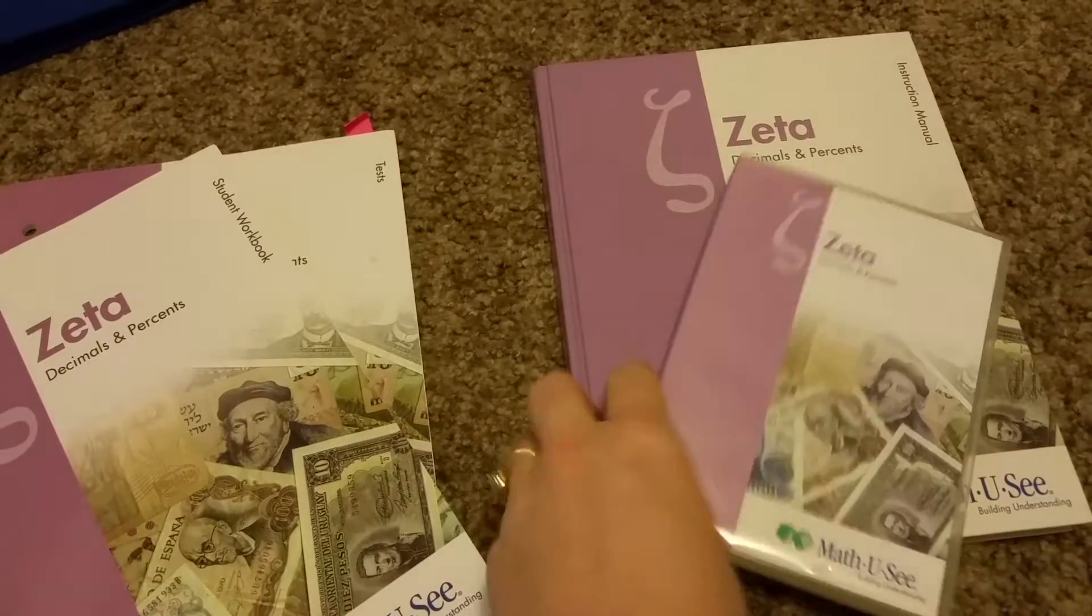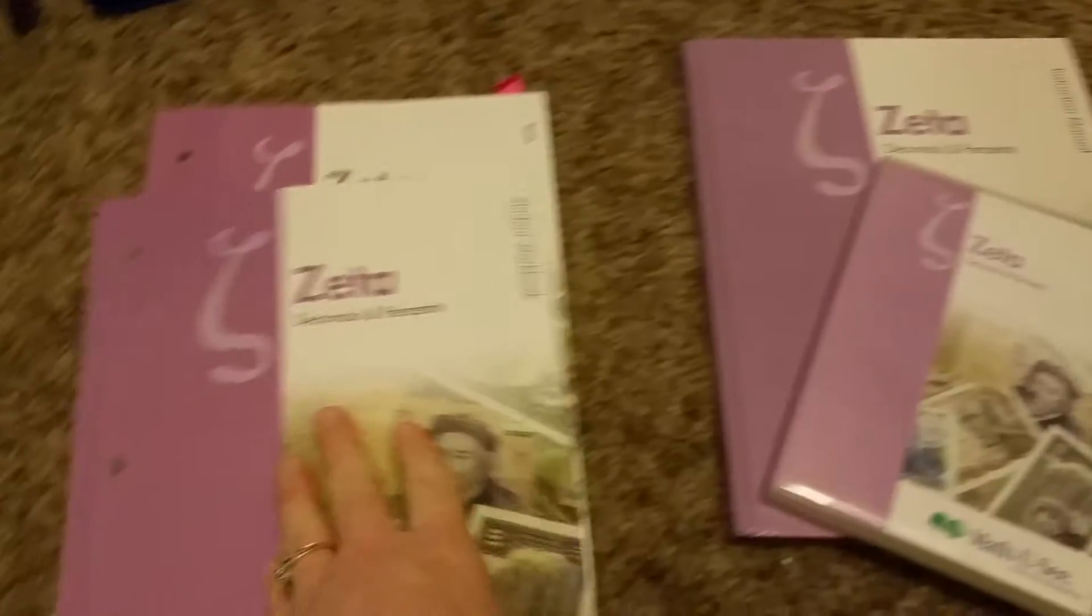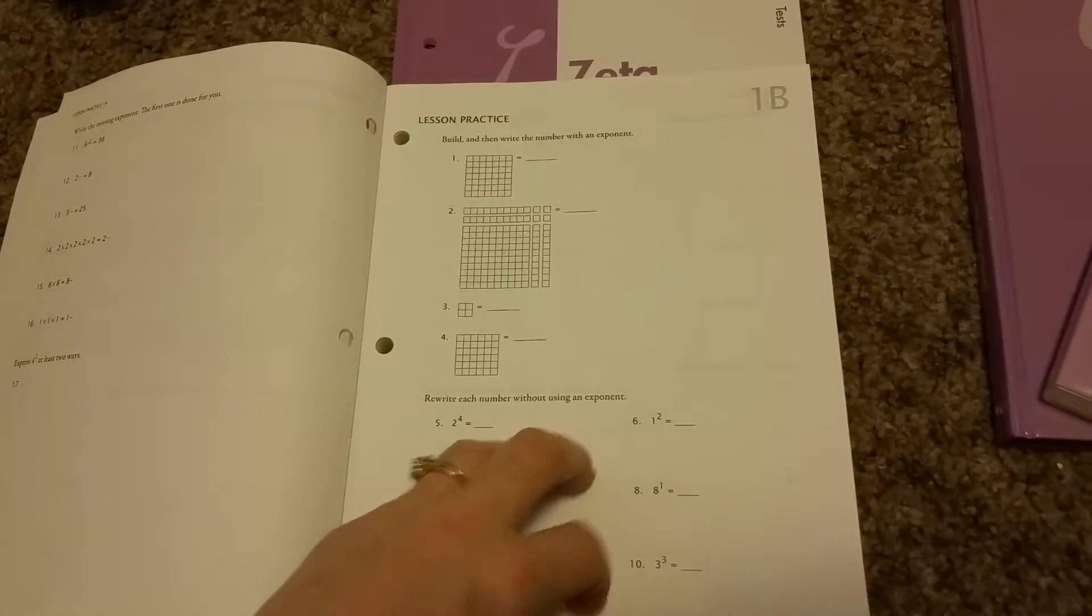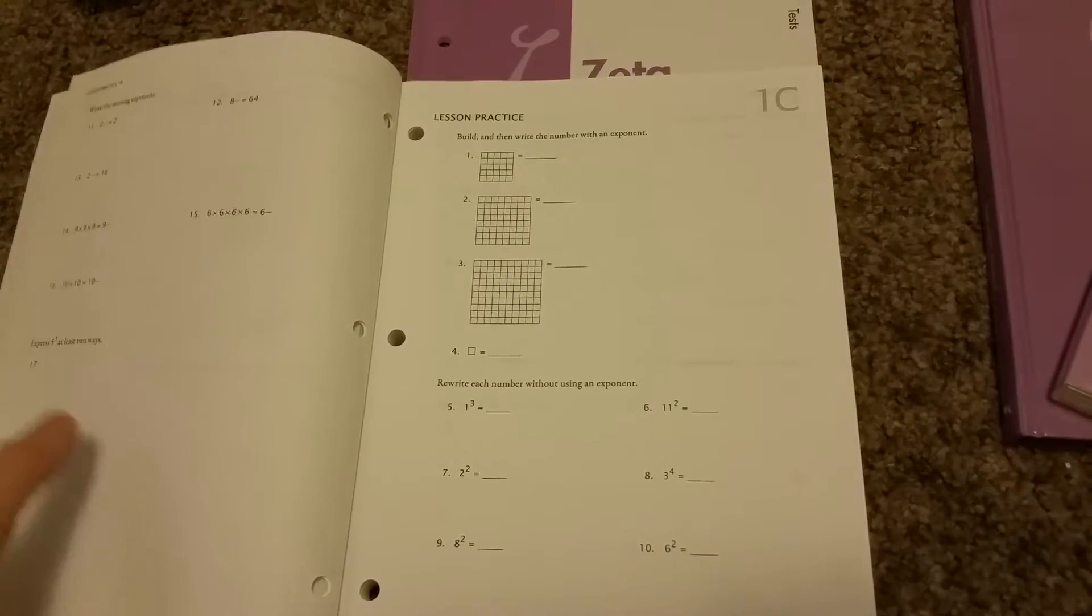So it's just like the other ones where you watch the lesson on the DVD, and then you have the workbook. So you always have A, B, and C for each lesson, which is the new concept.